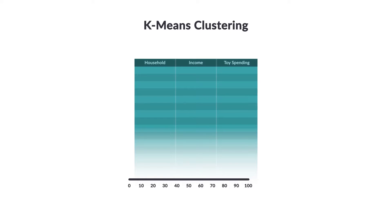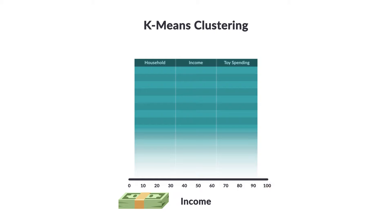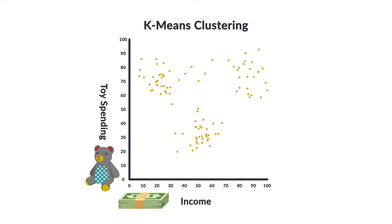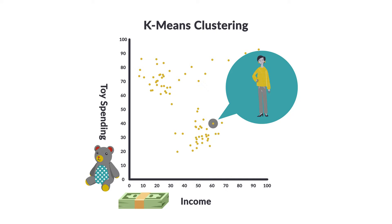In this graph, we see household income is along the x-axis, ranging from a low of 0 to a normalized high of 100. Money spent on toys is along the y-axis, ranging also from a low of 0 to a normalized high of 100. Now let's put our data on the graph. Each dot represents one person. This dot here represents someone who had a household income of about 63 and spent about 40 on toys. Remember, we've scaled our data.